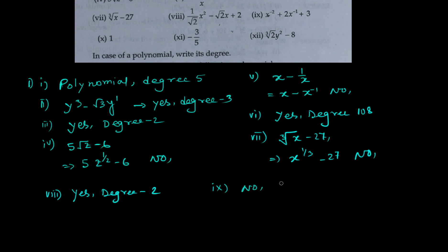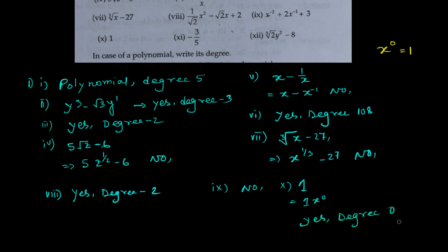The tenth one is the constant 1. We can write it as 1 times x to the power 0, because x to the power 0 equals 1. Since 0 is a non-negative integral, yes — it is a polynomial, and the degree is 0. If you have only a constant term, the degree will always be 0.